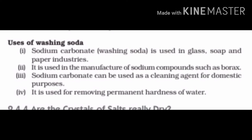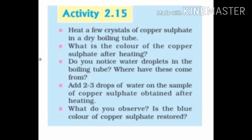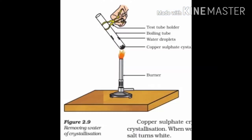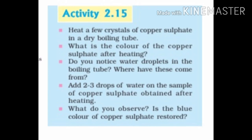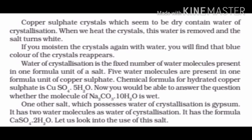Let us discuss an activity in which we heat a few crystals of copper sulfate in a dry boiling tube. Copper sulfate crystals are blue in color. On heating, we observe water vapors on the inside wall of the test tube, and the color of copper sulfate changes to white. On adding 2-3 drops of water to the heated copper sulfate, the blue color of the crystals is restored.